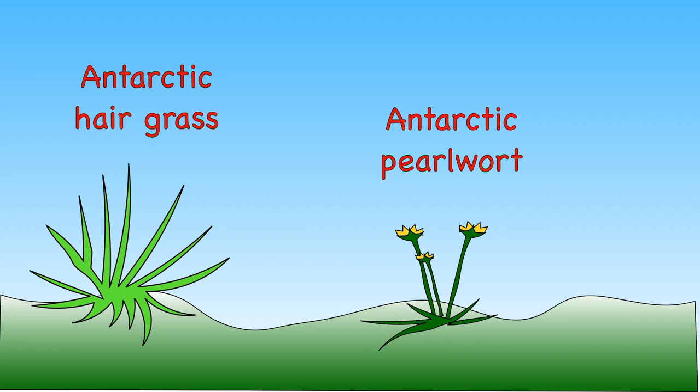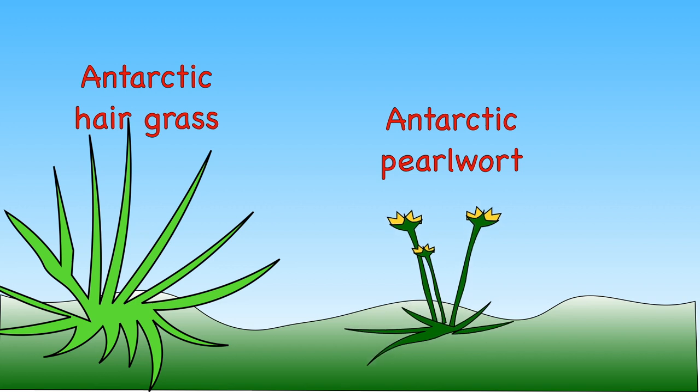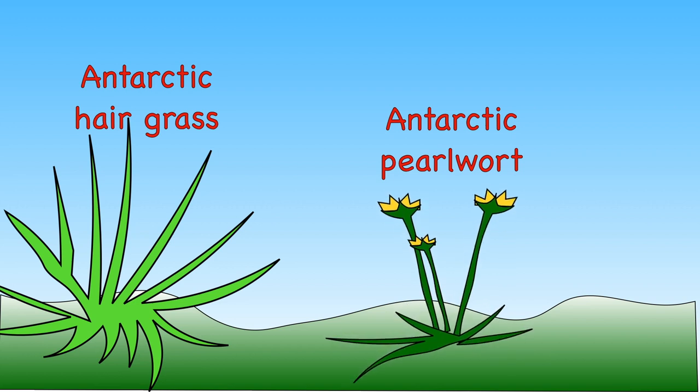Antarctica is considered a desert because it gets very little rain. It's an ice desert. Lichen, moss, Antarctic hair grass and Antarctic pearlwort grows here, especially around the penguin colony.